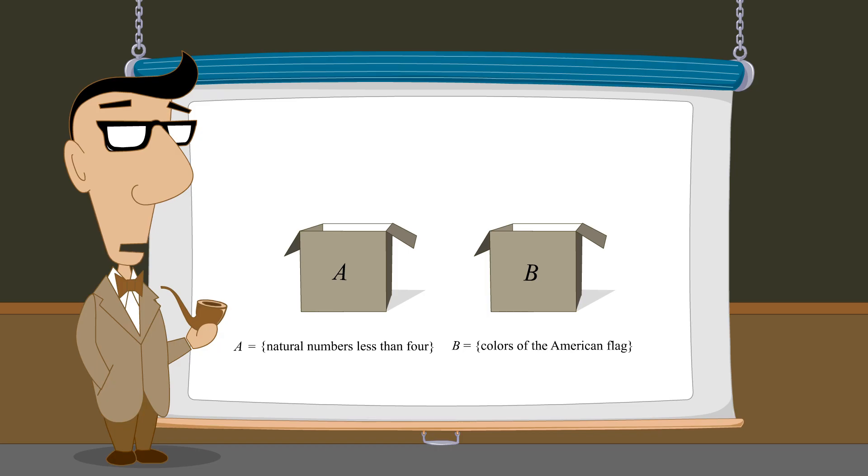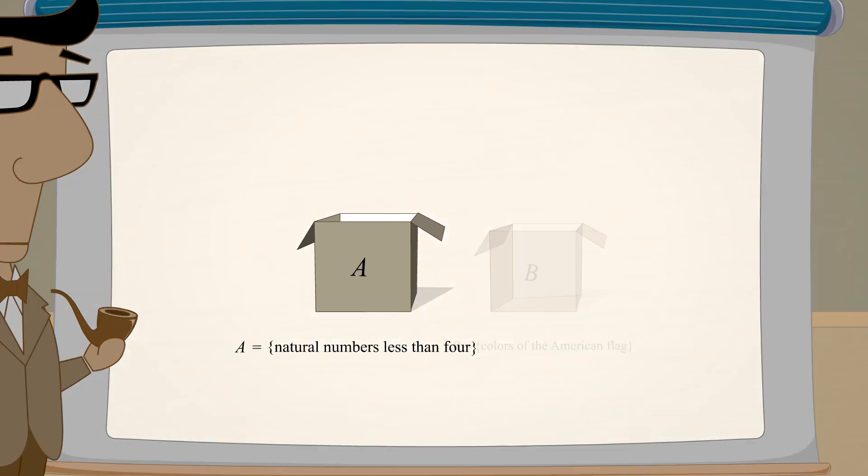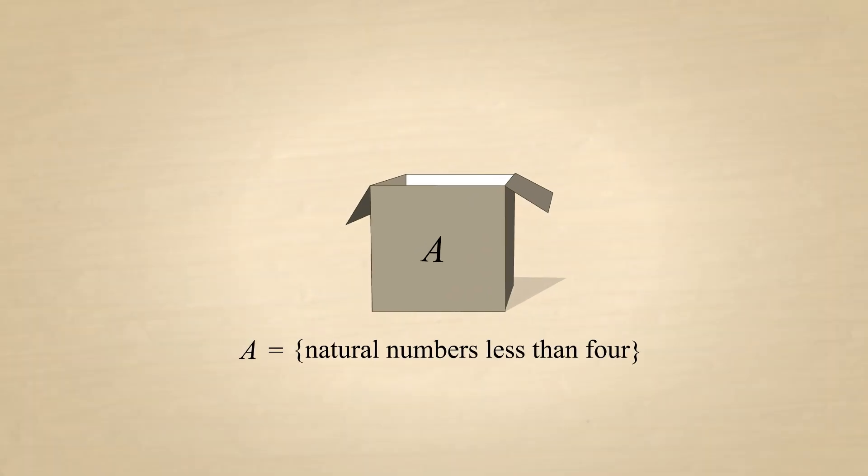There is also a more rigorous mathematical notation for describing a set, called set builder notation. To define a set using set builder notation, we choose a symbol, typically a small letter, to represent any element of the set. For example, let's use the letter X to represent a typical element of set A. Now, in the brackets we write X followed by a vertical bar, and then state the properties that every element X must satisfy.